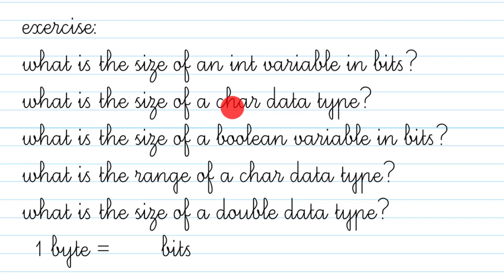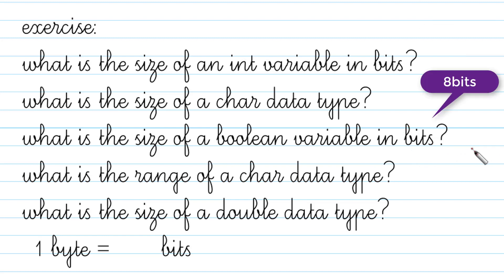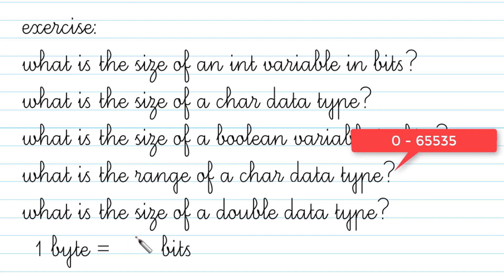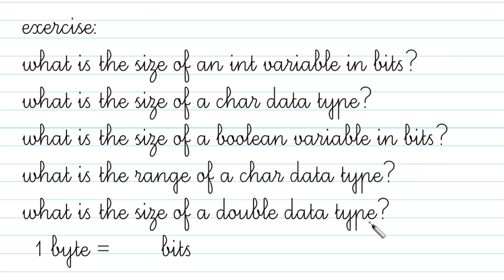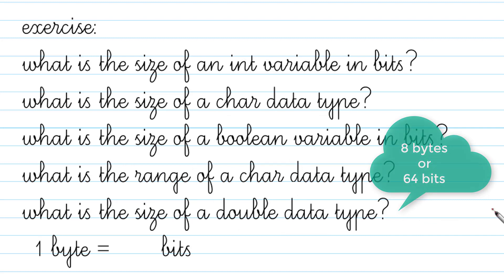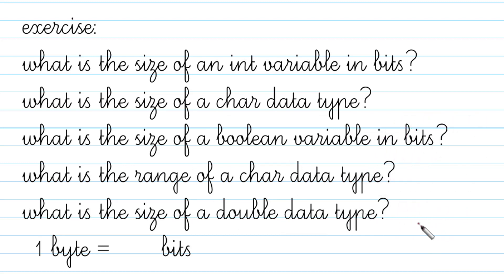What is the size of a char data type? The size is two bytes. What is the size of a boolean variable in bits? A boolean occupies one byte, so the answer is 8 bits. What is the range of a char data type? The range is 0 to 65,535. What is the size of a double data type? It is 8 bytes or 64 bits — just be careful to include the correct unit. Thanks for watching, please subscribe to e-study.in.